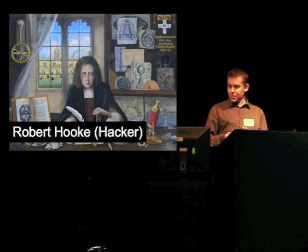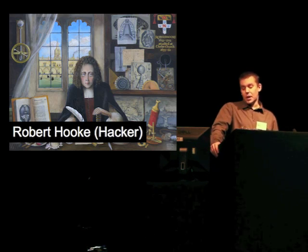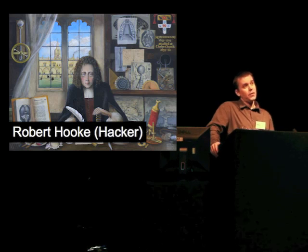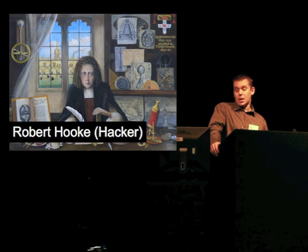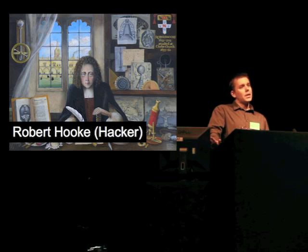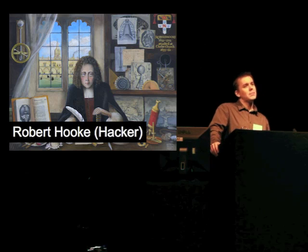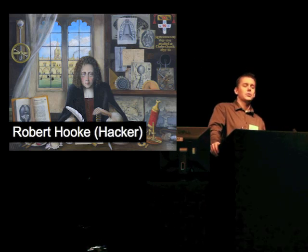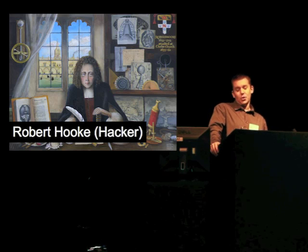I want to start off by giving you all a history lesson. This is a portrait of Robert Hooke. If you don't know Robert Hooke, he's a very famous scientist. He was an early member of the Royal Society. He was described as England's Leonardo — a natural philosopher, an inventor, a surveyor and an architect. He's kind of a bit of a hero of mine because he's got that hacker ethic. He liked to cut things up, measure them, invent things, put things together and just see how the world worked. He was an arch rival to Isaac Newton. Newton was more of a theorist; Hooke was more of a hacker.